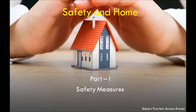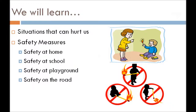Dear students, in this video we will discuss about the chapter Safety and Homes, Part 1 — Safety Measures. We will learn about situations that can hurt us, safety measures, safety at home, safety at school, safety at playground, and safety on the road. Humein kaun-kaun se situations mein kaise safety rules follow karne chahiye, aur kaun se safety measurements hote hain — home pe, school mein, playground aur road pe — un pe safety rules follow karke apne aap ko aware kar sakte hain.